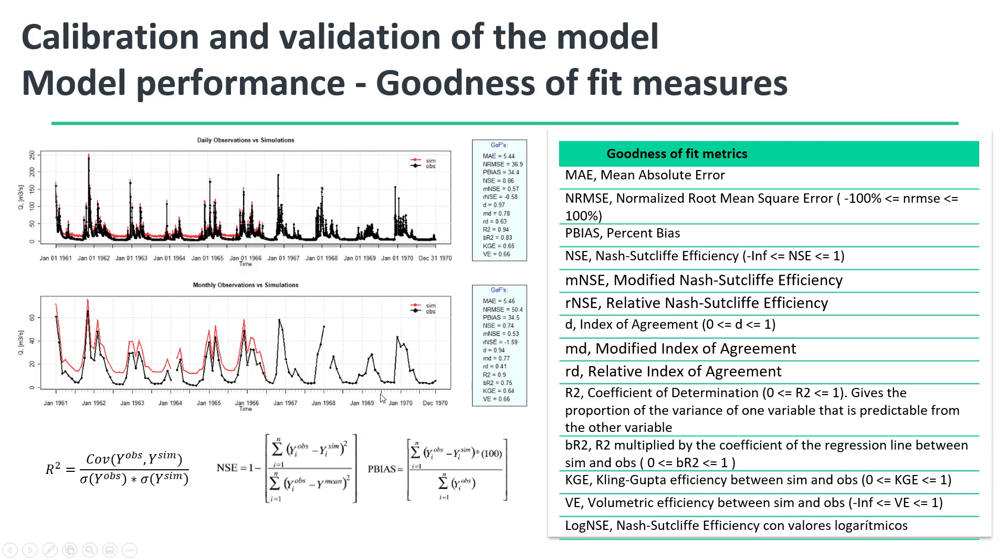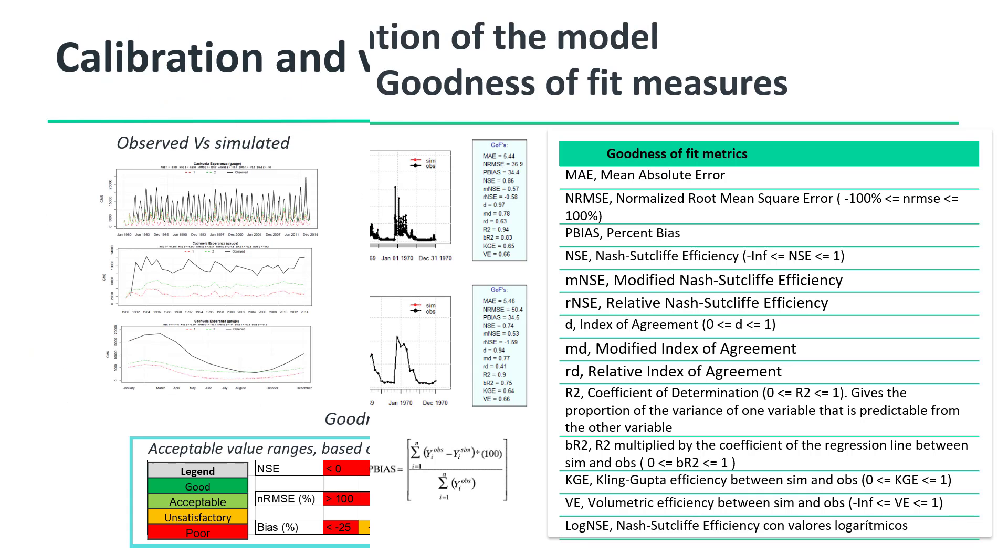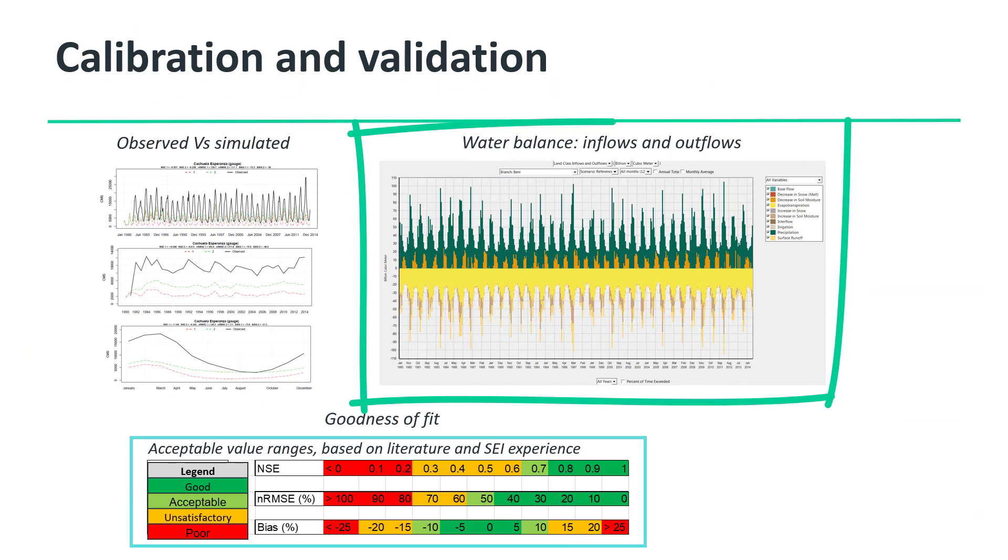To calculate goodness of fit metrics, simulated and observed stream flows are exported and processed by using, for example, R, Python, or Excel. You can also export the water balance components for each catchment and analyze whether the assigned soil parameters represent it correctly.